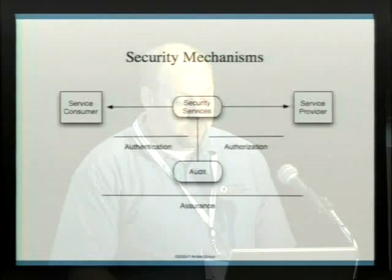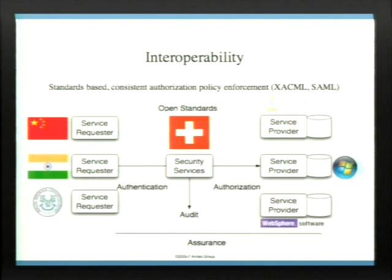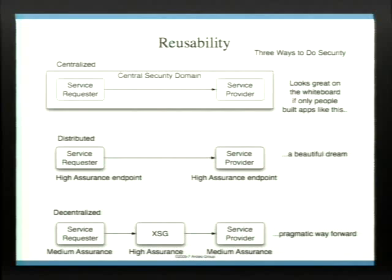We want to use authentication services, authorization services, and auditing services, and we want to be able to deliver those in a virtualized way so that we can authenticate you in Beijing, Bangalore, and Boston, and then authorize you in Manhattan. We want interoperability with open standards like SAML, WS-Security, or other open standards, so that we can authenticate and authorize you on your WebLogic system, your WebSphere system, your SAP system, your Vista system. We need consistent policy enforcement across these platforms.